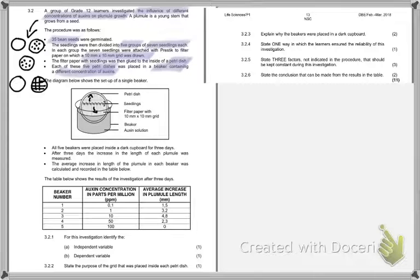The diagram shows the setup of a single beaker. We've got our Petri dish, our seedlings, our filter paper, our beaker, and our auxin solution. If we look carefully at these diagrams, we can see the individual seeds and something growing out of them, perhaps going up, and also a little something growing downwards. All five beakers were placed in a dark cupboard for three days. That's important information. They don't tell you that for nothing.